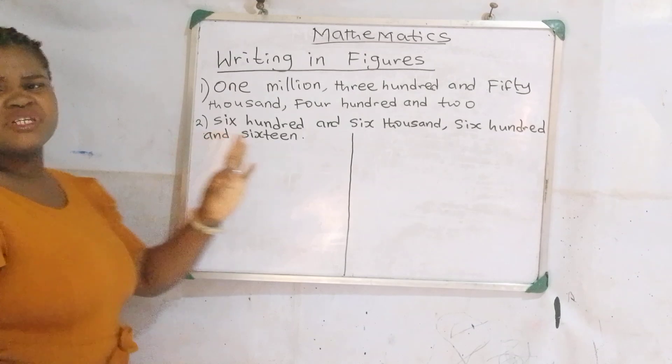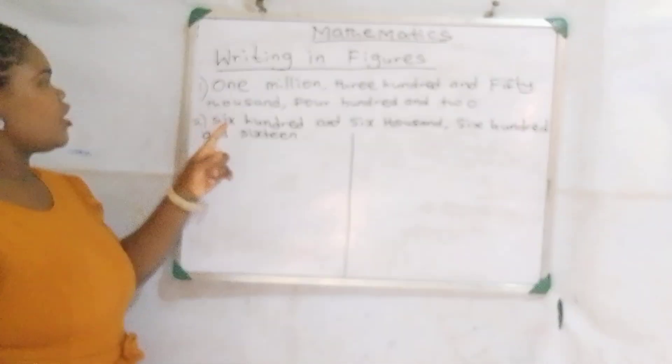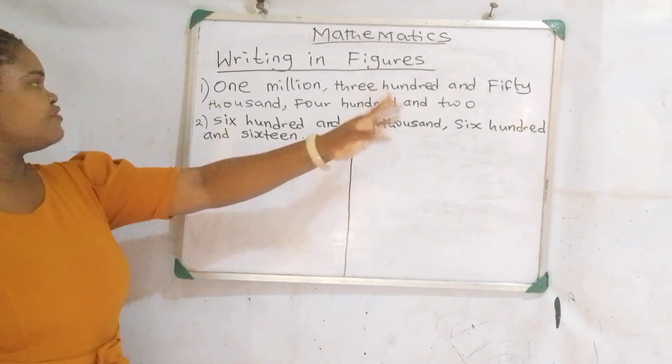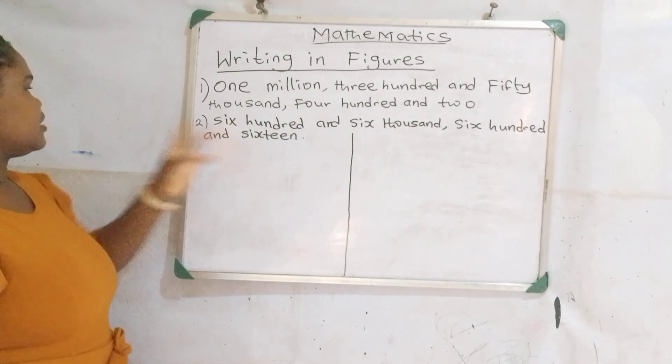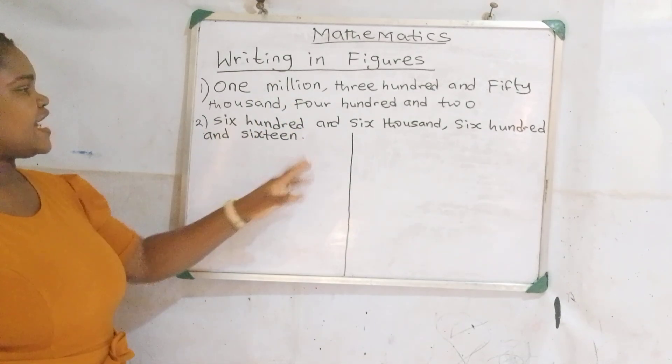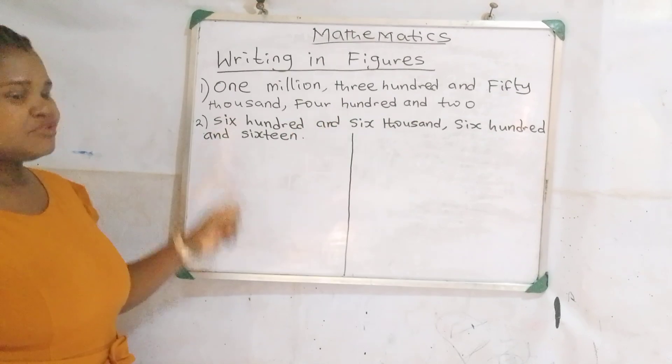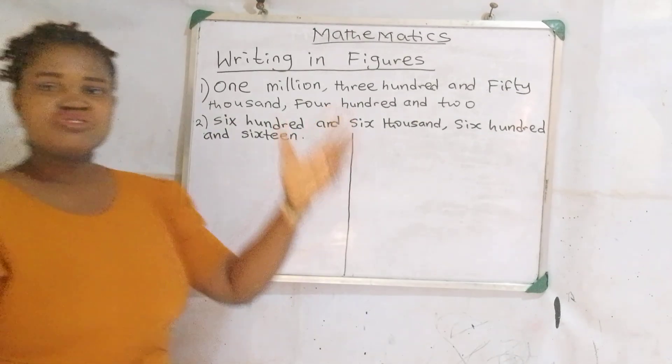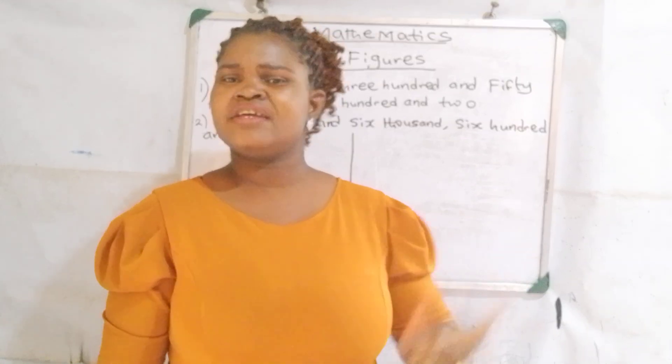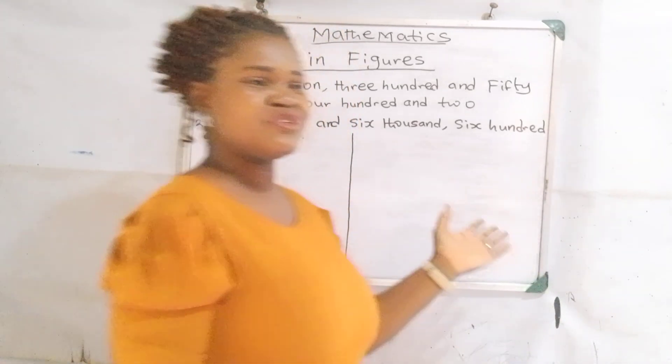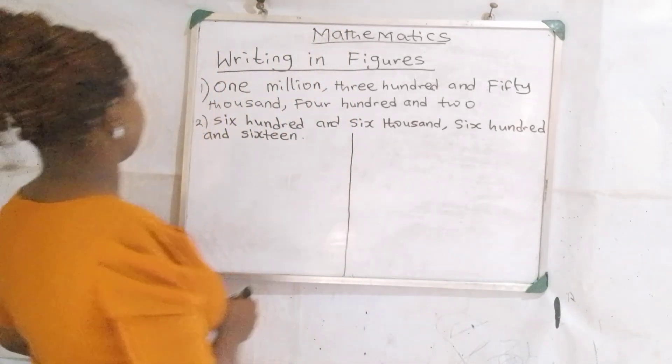Now let's see. We have two questions on the board, which is 1,350,402. The second question is 606,616. I want to show you the simplest method of writing in figures. Follow me, let's see. Solution.